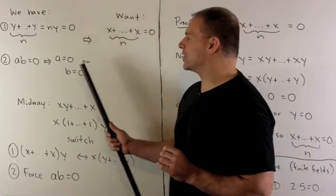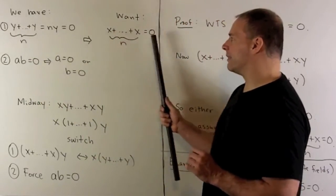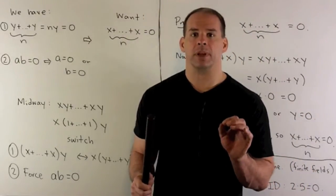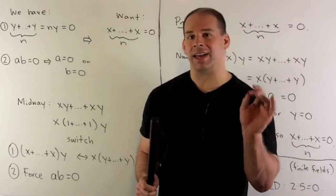The thing that stands out is, here I have a sum of y's n times, here I have a sum of x's n times. So we want to figure out how we can get from one to the other. The middle ground is to take the sum of x times y, n times.